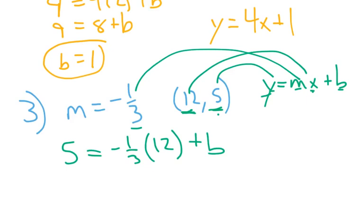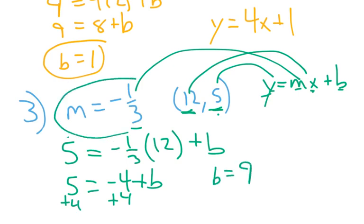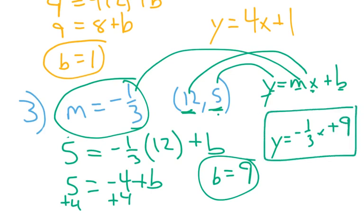It's very tempting to put in 12 over here and 5 over there, but don't do that. That's not going to help you solve the problem. That's only going to cause problems. Okay, so now we get 5 equals negative 4 plus b. Add 4 to both sides. b equals 9. We have m. We have b. We bring it all together. y equals negative 1 third x plus 9. And there we go.